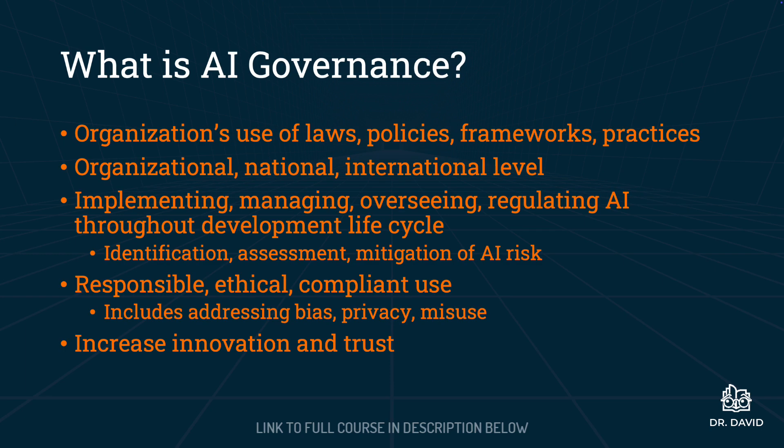AI governance — a term you need to know for the exam — is an organization's use of laws, policies, frameworks, and practices to manage risk. These policies can be organizational policies for a specific business, or laws and frameworks at a national or international level. AI governance involves implementing, managing, overseeing, and regulating artificial intelligence throughout the development lifecycle.